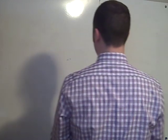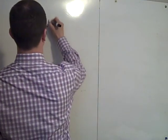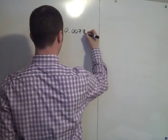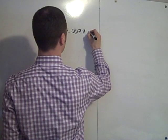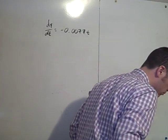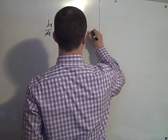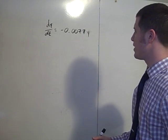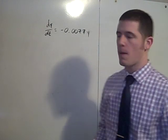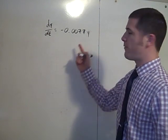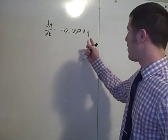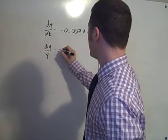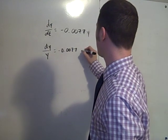You're given a differential equation dy/dt equals negative 0.0077y, and t is measured in years. Find the half-life. So this is a differential equation that you can solve by separating the variables. We're going to divide both sides by y and multiply both sides by dt. So we have dy/y equals negative 0.0077 dt.